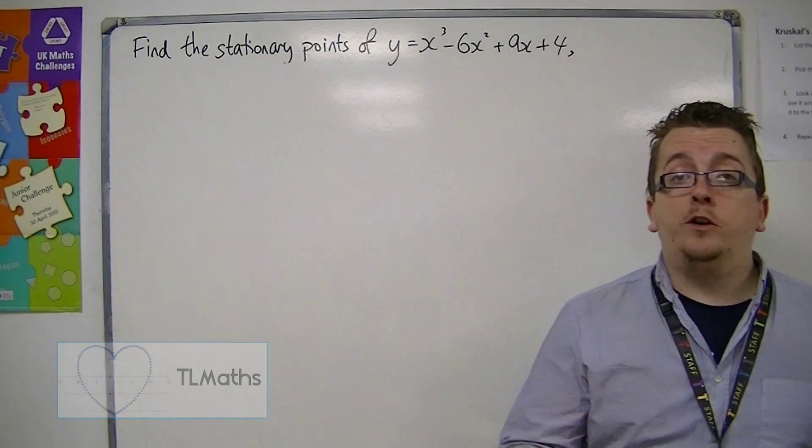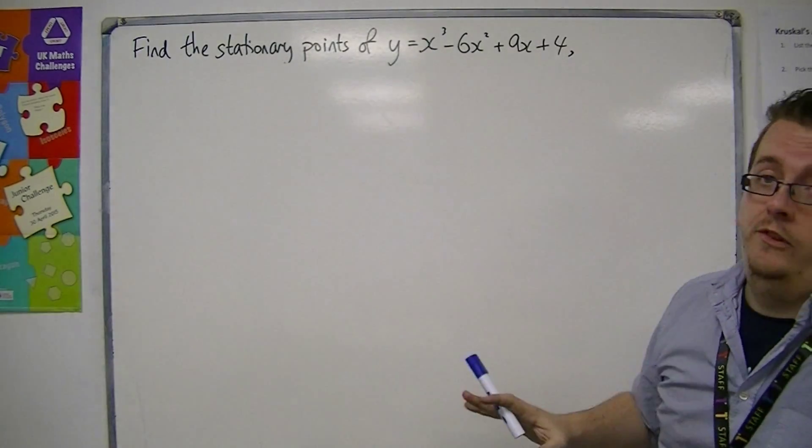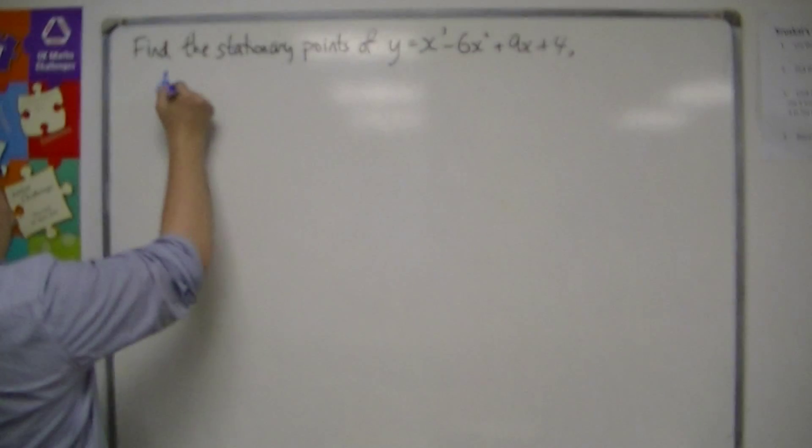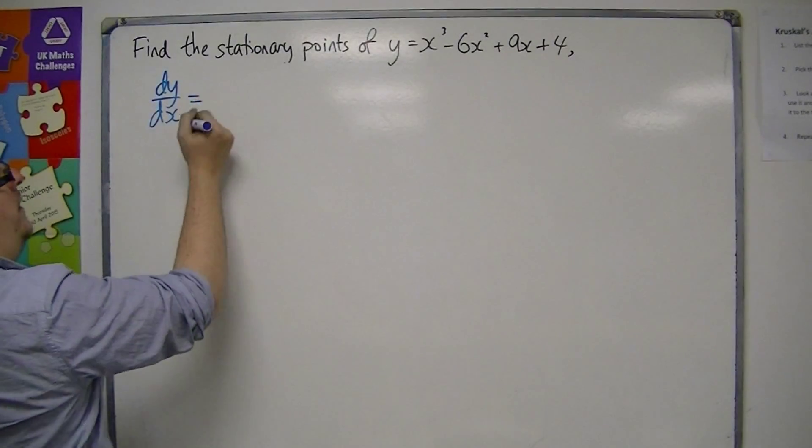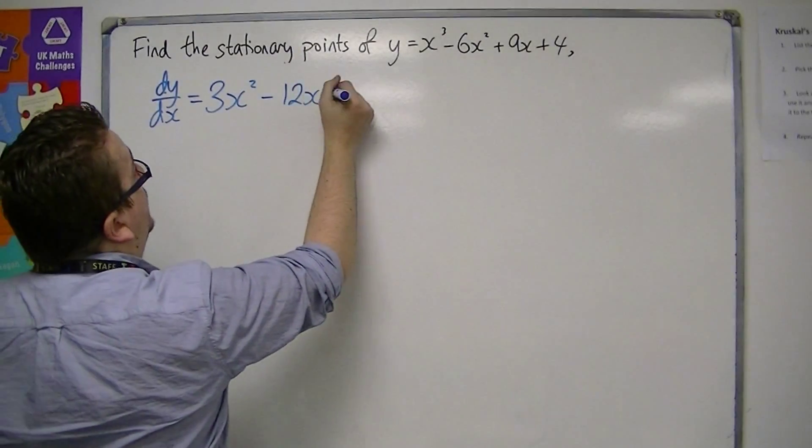In this video we're going to be looking at how we can find the stationary points of this curve. First of all, we need to find dy/dx. So we differentiate this, and we get 3x² - 12x + 9.